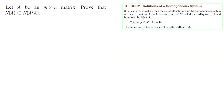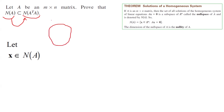Let A be an M by N matrix. Prove that the null space of A is a subspace of the null space of A-transpose times A. To prove a set is a subset of a larger set, take a random element in the smaller set and show it lands in the larger set. So take a random element x in the null space of A; our goal is to show x is also in the null space of A^T·A.